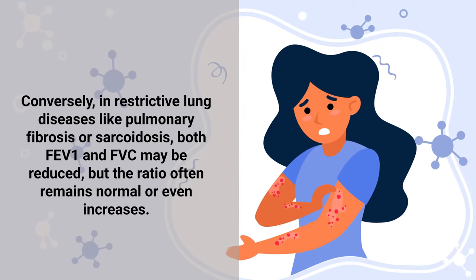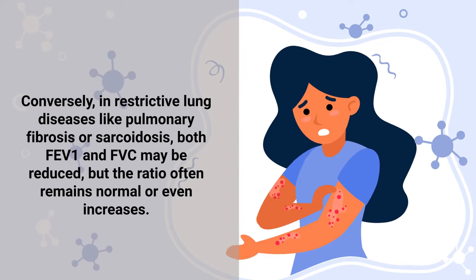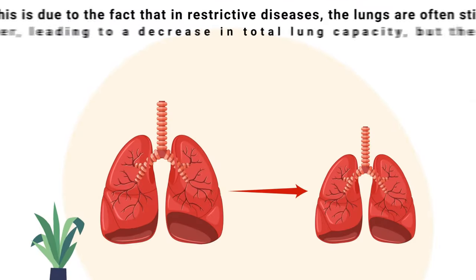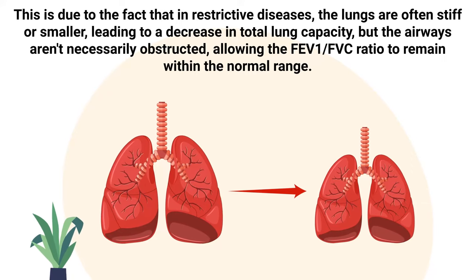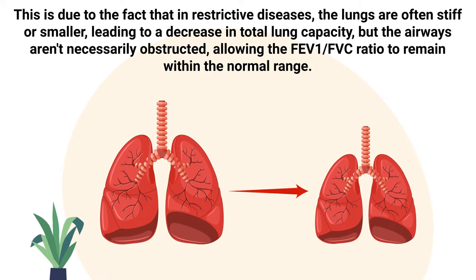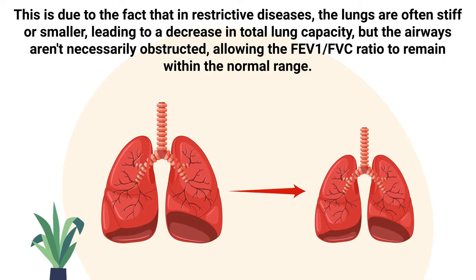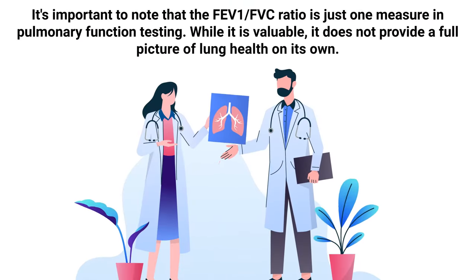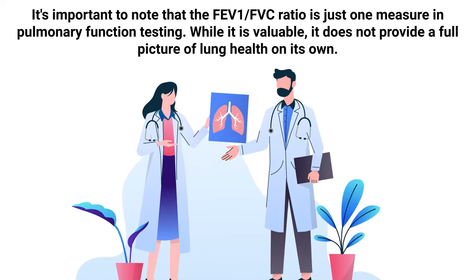Conversely, in restrictive lung diseases like pulmonary fibrosis or sarcoidosis, both FEV1 and FVC may be reduced, but the ratio often remains normal or even increases. This is due to the fact that in restrictive diseases the lungs are often stiff or smaller, leading to a decrease in total lung capacity, but the airways aren't necessarily obstructed, allowing the FEV1 to FVC ratio to remain within the normal range.